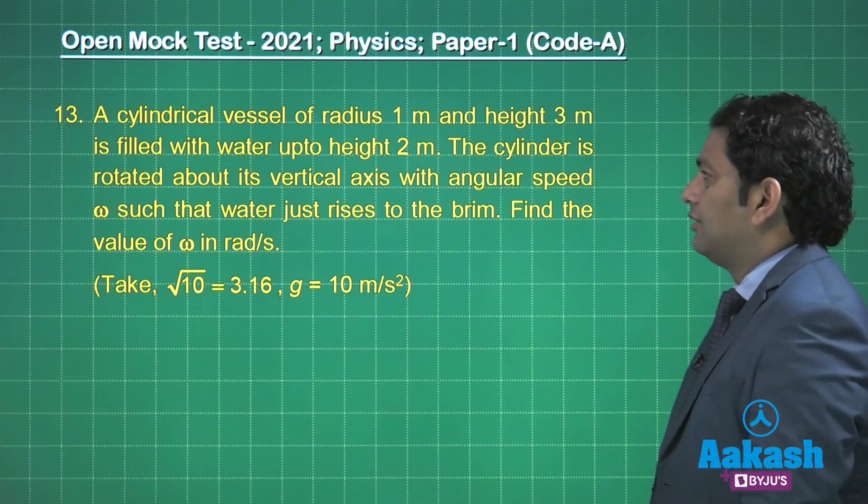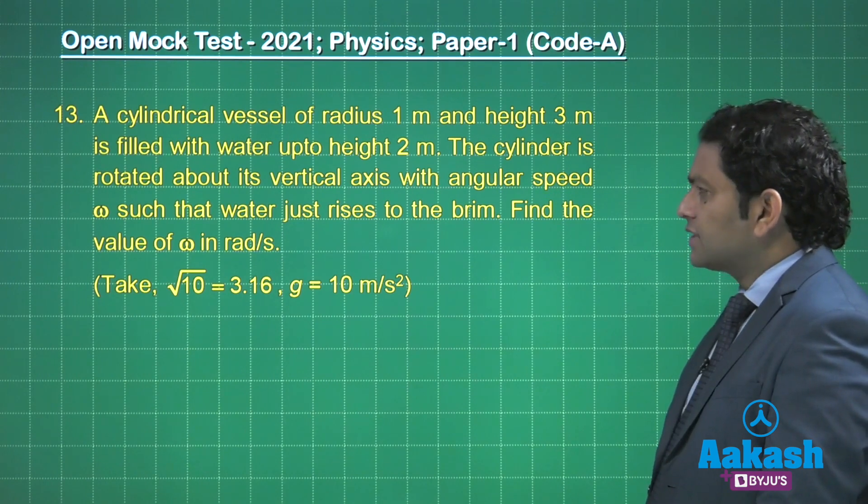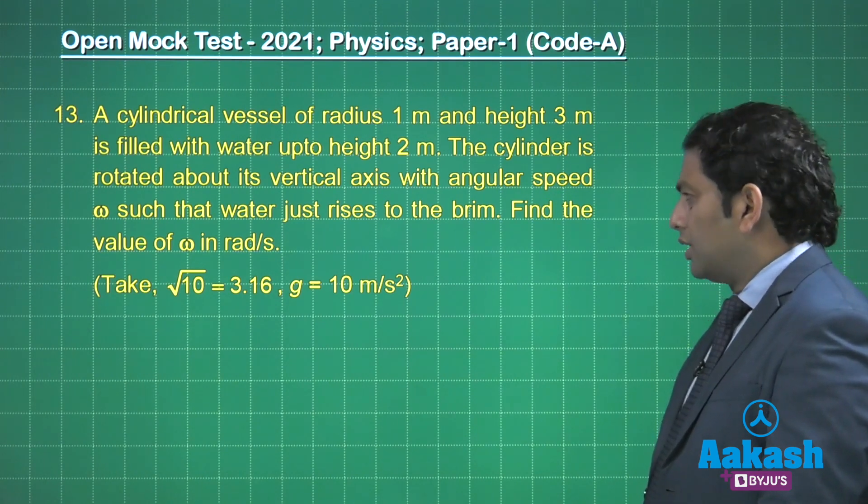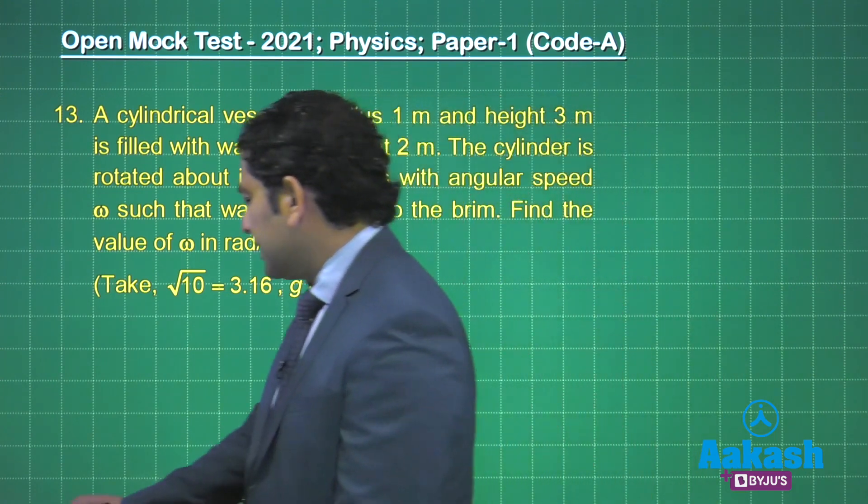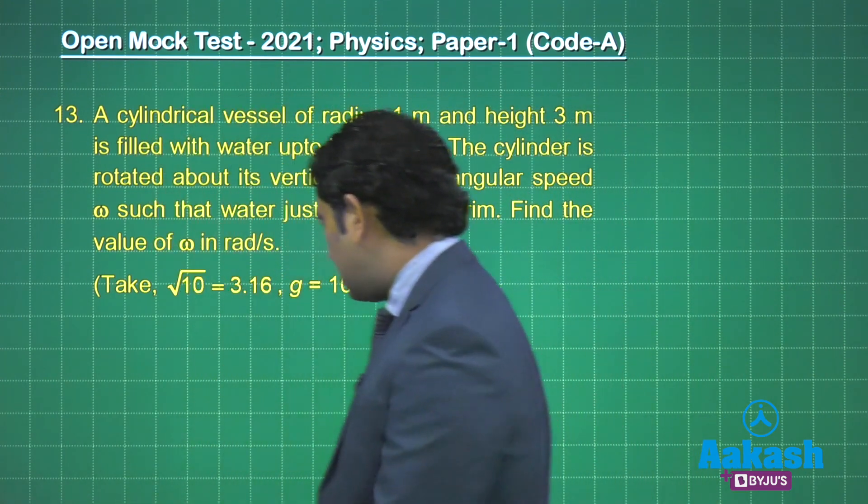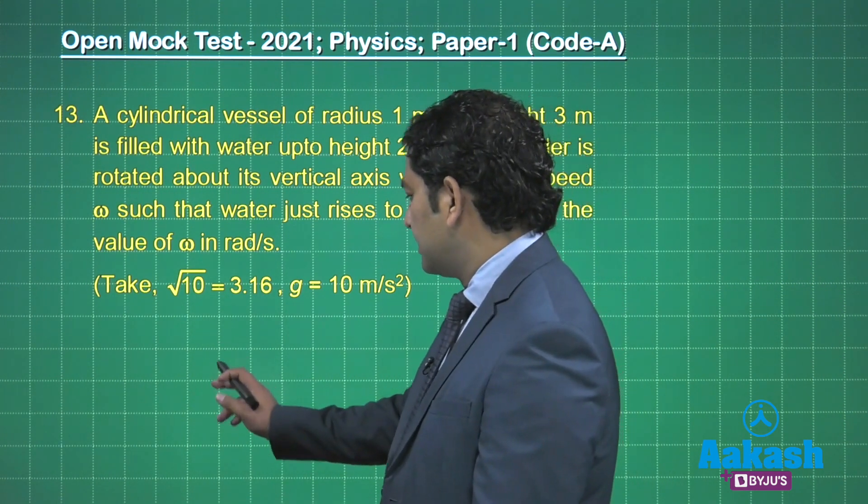A cylindrical vessel of radius 1 meter and height 3 meter is filled with water up to height 2 meter. So the first thing is that we need to draw the image of this.